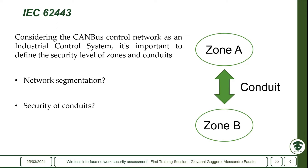We must ensure that the main control network is protected from malicious attacks. Drawing a parallel with the ISA/IEC 62443 standard for industrial control system protection — which cannot be directly applied to this type of system — the standard introduces two concepts: the zone, a portion of the network that must ensure a security level, and the conduit, a channel that makes two zones communicate and must ensure the same level of security as the two zones it connects.